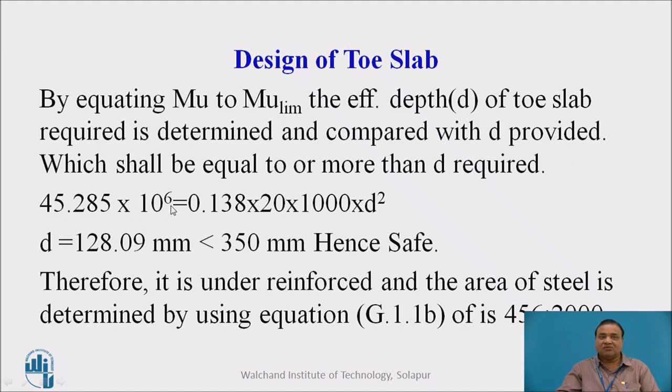This is our maximum moment, 45.285 kilonewton meter, converted into Newton mm by multiplying by 10 to the power of 6. Using 0.138 FCK BD square, where B is 1 meter or 1000 mm and FCK is 20, we determine D which works out to be 128.09 mm, which is less than 350 mm provided in preliminary dimension. Hence it is safe.